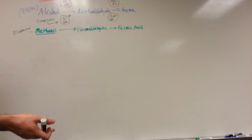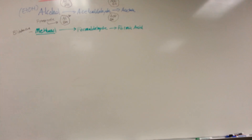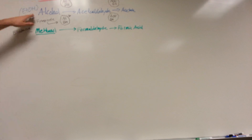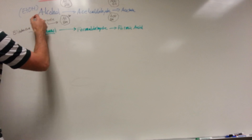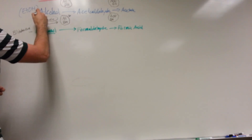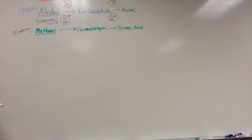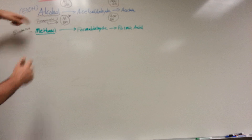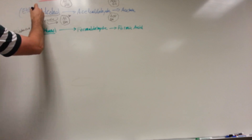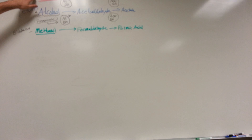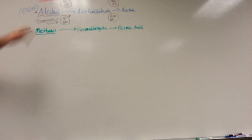With ethylene glycol toxicity, you get neurologic problems, gastrointestinal problems, metabolic acidosis, and eventually kidney failure if untreated. Treatment is the same as for methanol: give fomepizole, or give a high dose of ethanol to outcompete this enzyme. Just like with methanol, we want to excrete the ethylene glycol via the kidneys rather than have it broken down by the liver.